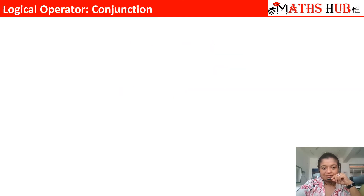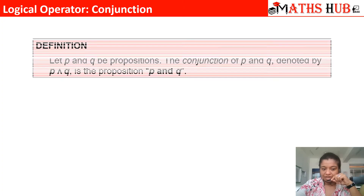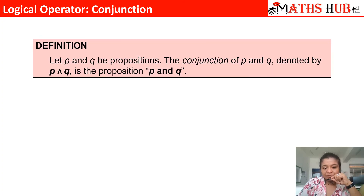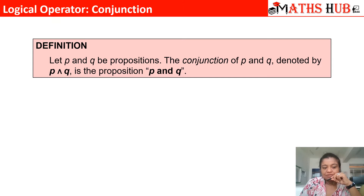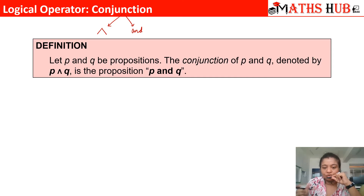Let us understand the symbols and the meaning of the logical connector conjunction. Conjunction means that whenever we have two propositions p and q, the conjunction of p and q is denoted by the opposite of the victory symbol — this symbol means conjunction. So p conjunction q means p and q; the English meaning of conjunction is 'and', joining two propositions with the and operator.